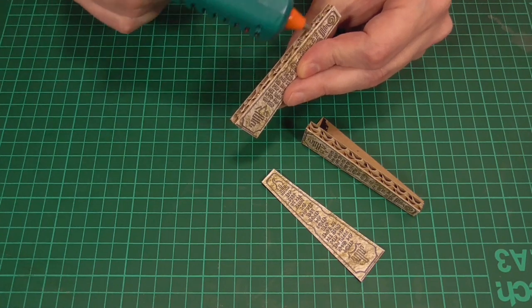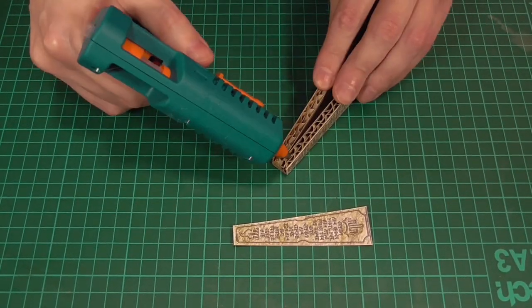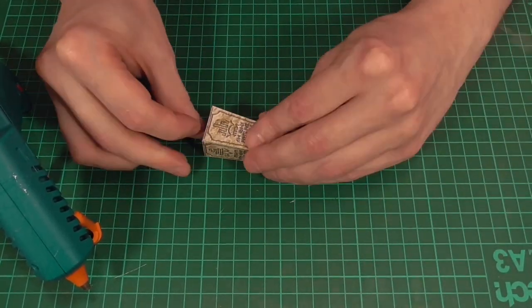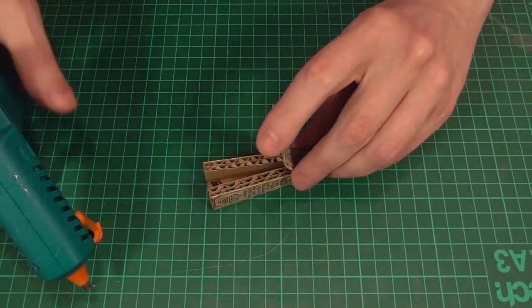Then we'll do a similar thing with the other corrugated piece. So there you go, and then it's just a matter of sticking on the final side. As you can see I find this works best if I glue on the top part first.